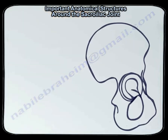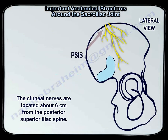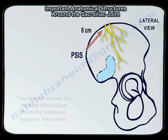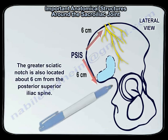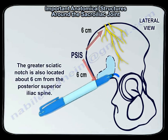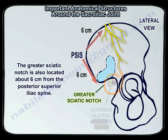The colonial nerves are located about six centimeters from the posterior superior iliac spine. The greater static notch is also located about six centimeters from the posterior superior iliac spine. Here you can see the greater static notch with the superior gluteal artery and nerve.